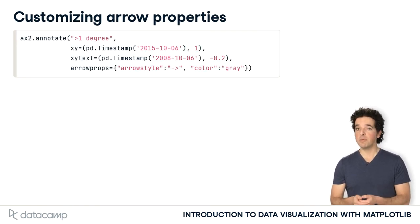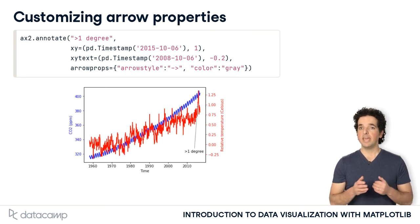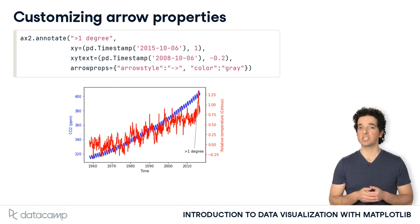We can also customize the appearance of the arrow. For example, here we set the style of the arrow to be a thin line with a wide head. That's what the string with a dash and a smaller than sign means. We also set the color to gray. This is a bit more subtle.